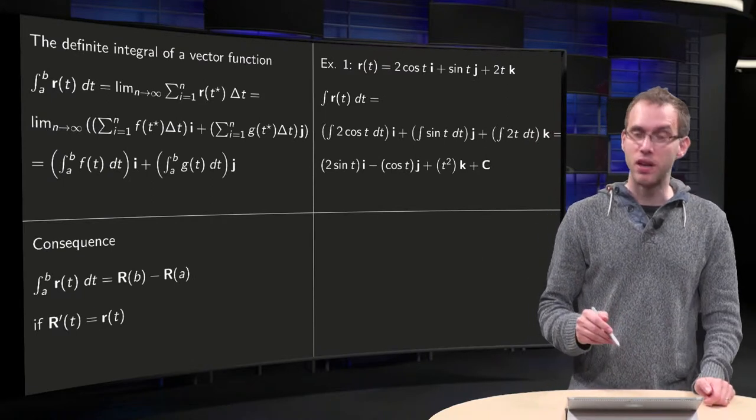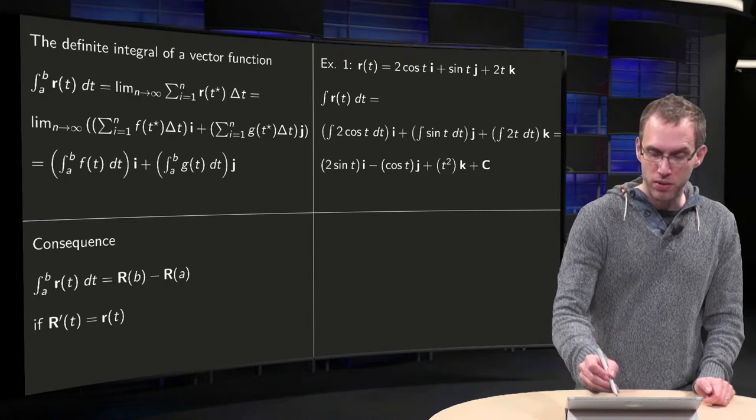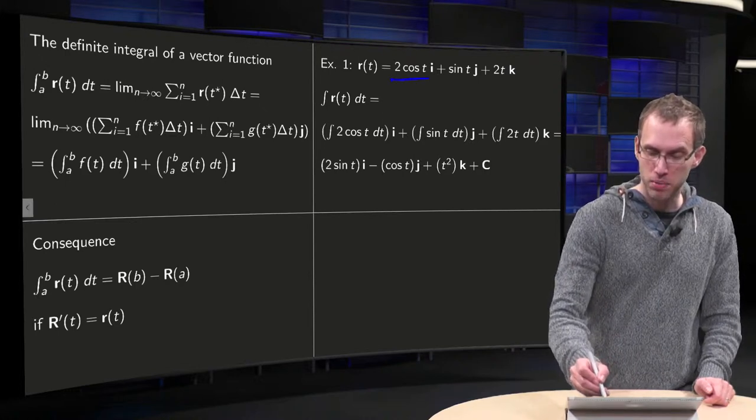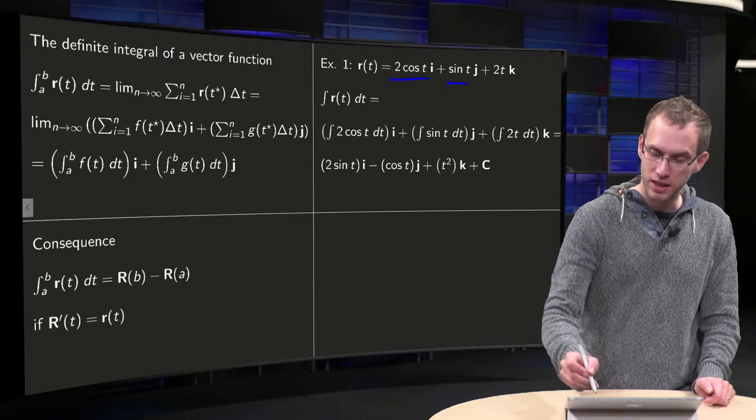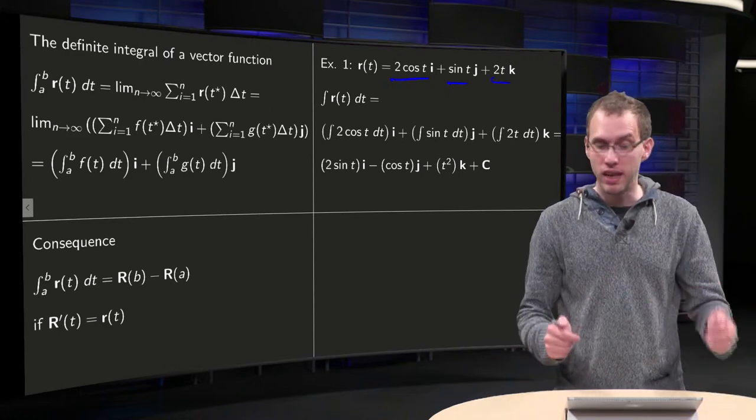So let's do an example in 3D. We have r(t) equals 2cos(t)i plus sin(t)j plus 2t k. What's the indefinite integral?